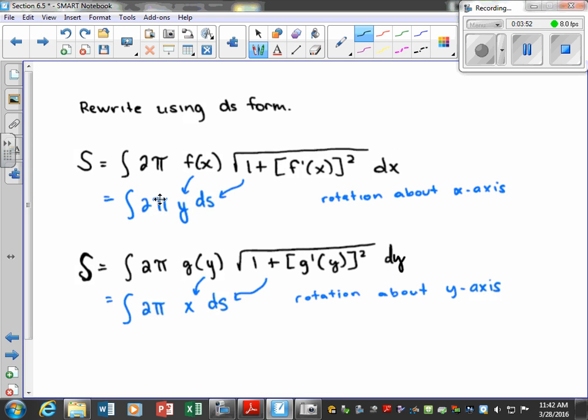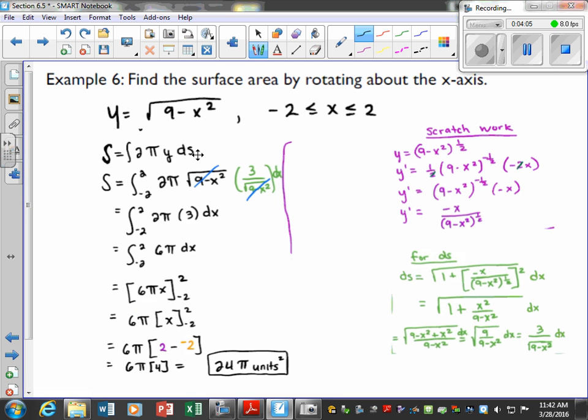So, I went ahead and used this formula, which is a simplified version. If you prefer this one, then that's fine. Either one that you prefer, but you can see that this one's a little bit easier to remember than this one. So, I started with this. I brought down 2π. Now, my interval for the x values are from -2 to 2. So, 2π, y equals, well, y equals this value. So, I'll plug in that for my y equals. And then ds.